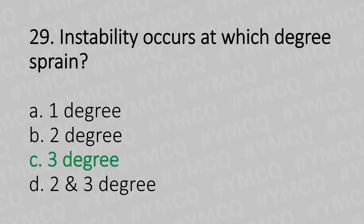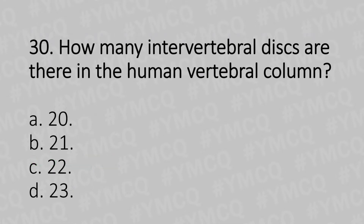Moving to our 30th question. How many intervertebral discs are there in the human vertebral column? Option A: 20. Option B: 21. Option C: 22. Option D: 23. And the answer is Option D: 23.